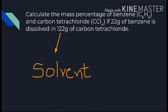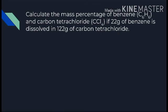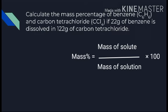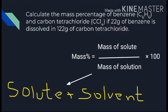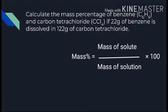Our formula: mass percentage = (mass of solute / mass of solution) × 100. To calculate mass of solution: mass of solution = mass of solute + mass of solvent. Put the values in and solve it.